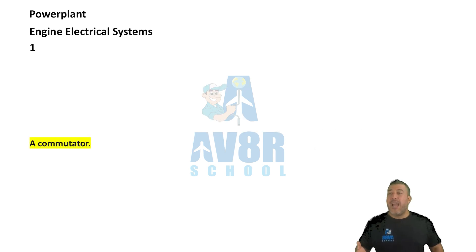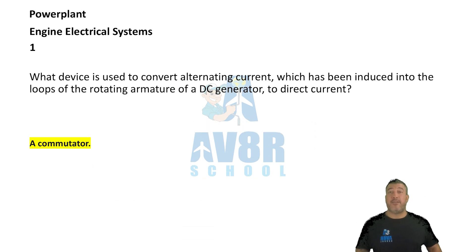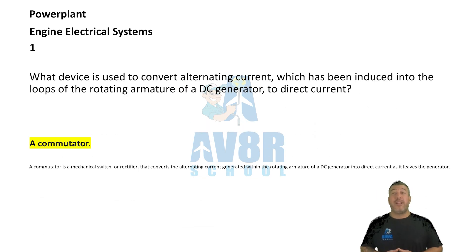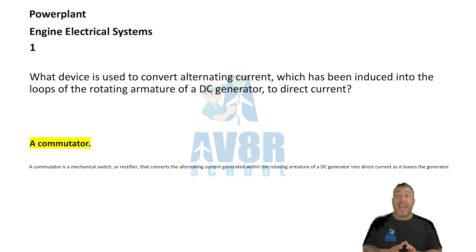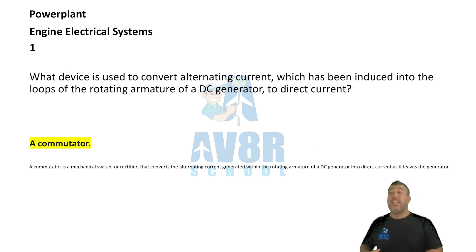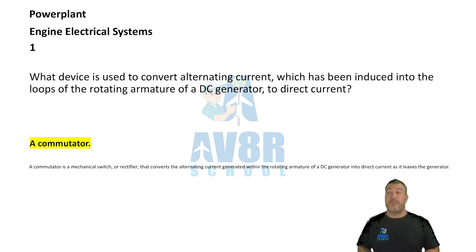Question number 1. What device is used to convert alternating current, which has been introduced into the loops of the rotating armature of a DC generator, to direct current? You use a commutator.